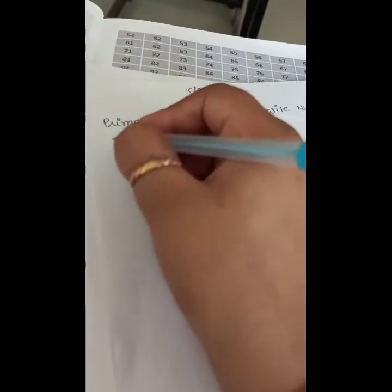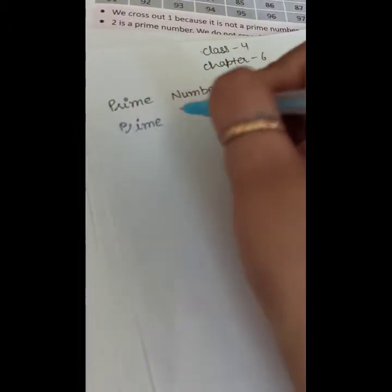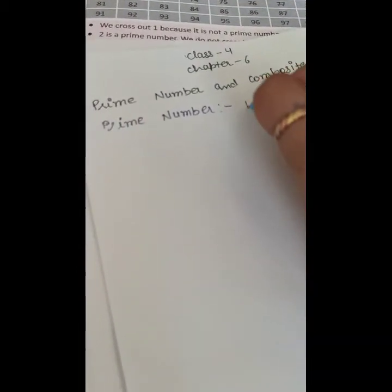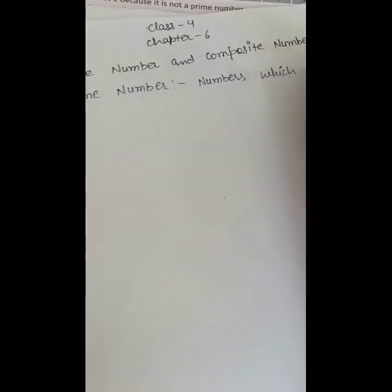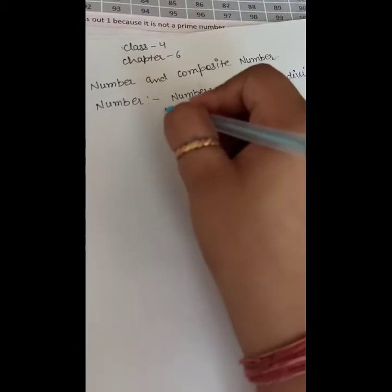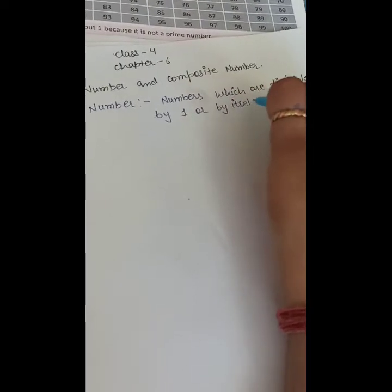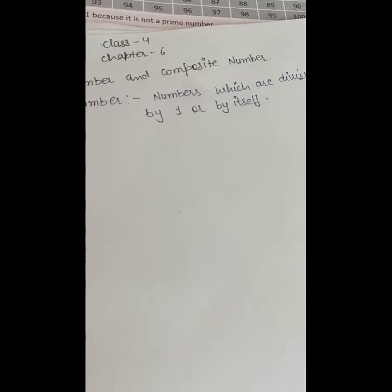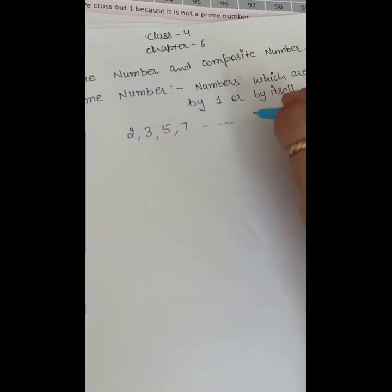So first of all, what is a prime number? Prime numbers are the numbers which are divisible by one or by itself. Prime numbers are those numbers which are either divided by one or by themselves — like 2, 3, 5, 7, and so on. They are the prime numbers.